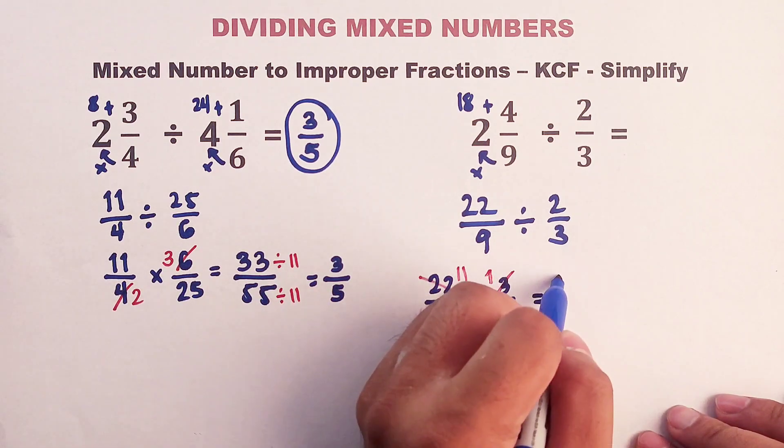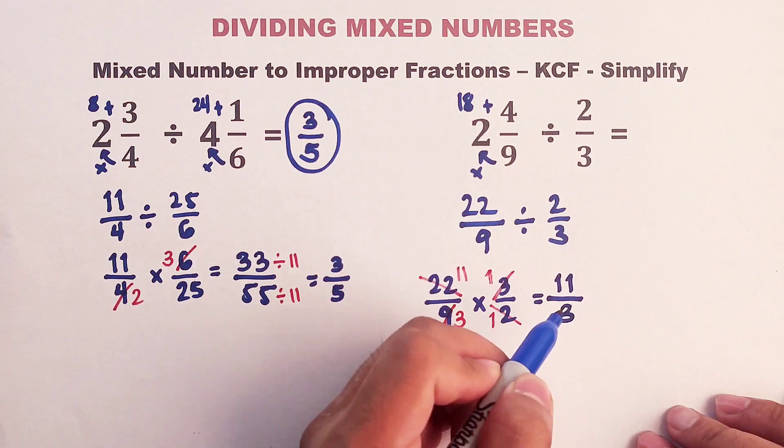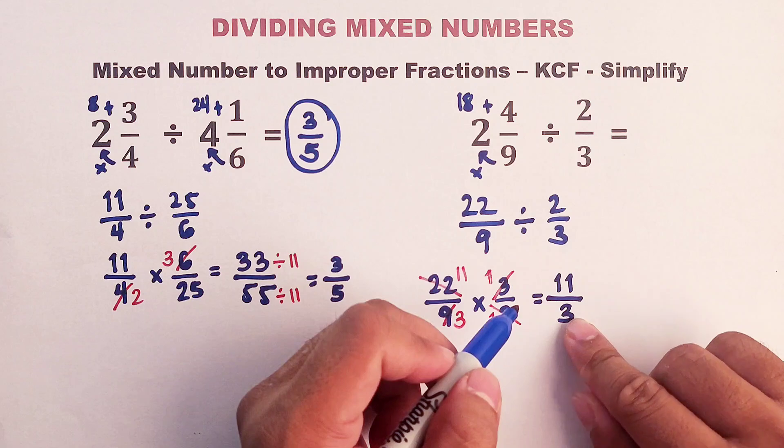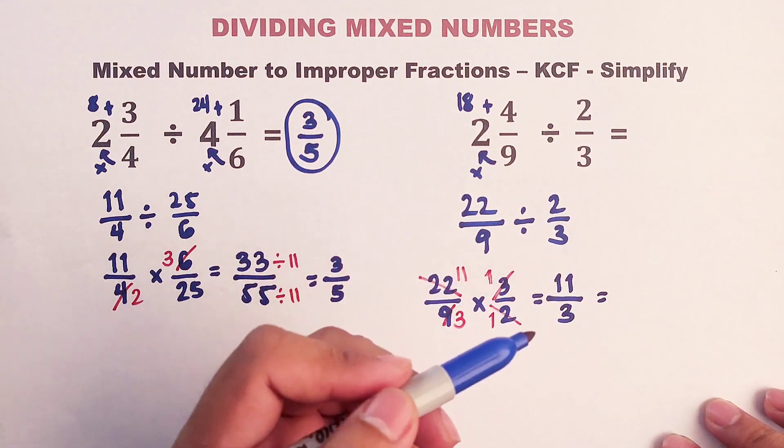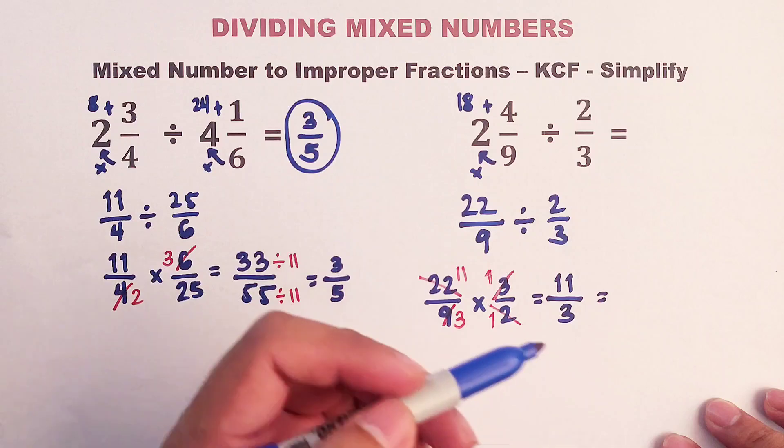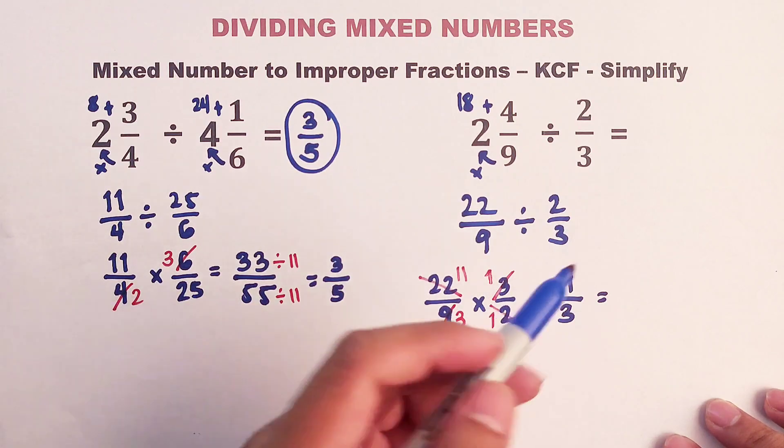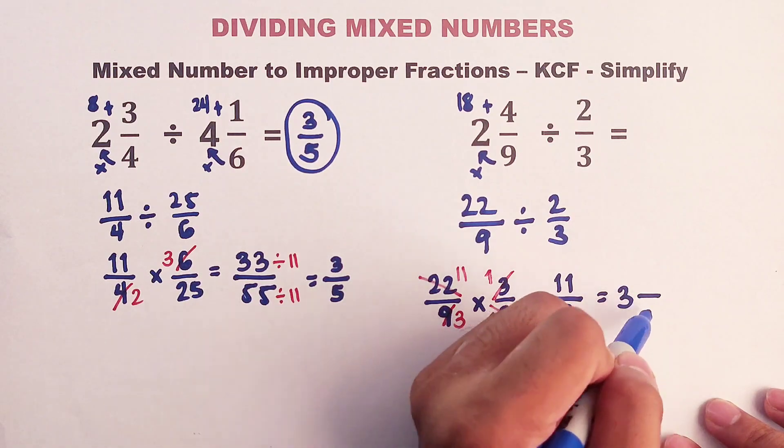11 times 1 is 11. Over 3 times 1 is equal to 3. And as you can see, this one is an improper fraction. We will convert this into a mixed number. So you can use the long division. But here, I will ask myself, how many 3's do we have in 11? We have 3 threes. And now, we will copy the denominator, which is 3.